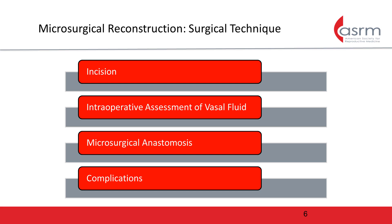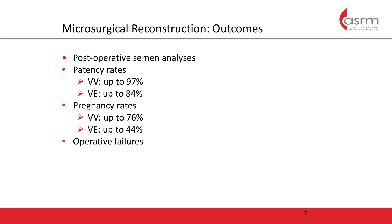Both procedures are typically well tolerated, and complications are rarely reported. After reconstruction, postoperative semen analyses are typically obtained every 8-12 weeks. With the use of microsurgical techniques, success rates have been reported to be quite high. For VV, patency rates have been reported to be as high as 97%, with pregnancy rates as high as 76%. For VE, the patency rates have been reported to be as high as 84%, with pregnancy rates of up to 44%.